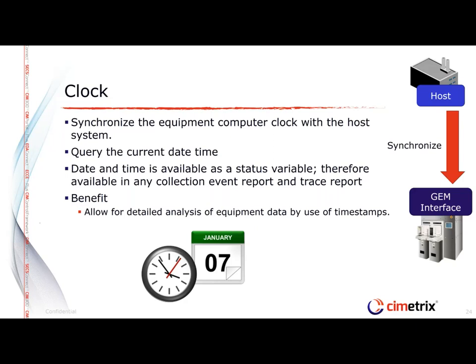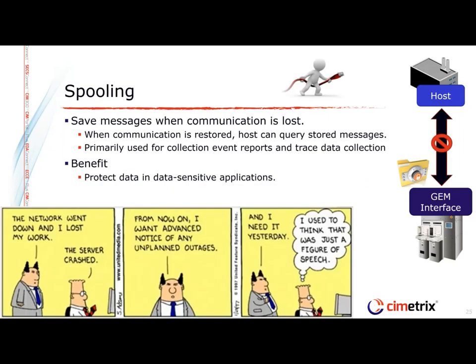There's also a clock feature in GEM for reporting the clock from the equipment. It allows the host system to synchronize the clock with the equipment, and by synchronizing clocks between the host and the equipment, data collection becomes significantly more useful because you can correlate data from one GEM interface to another. Without clock synchronization, you can't really correlate data from one piece of equipment to another or to other systems in the factory.